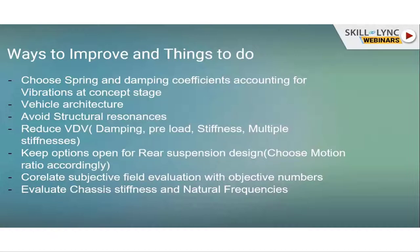I can place different mass systems at different locations of the vehicle and understand the effect on each frequency. Avoid structural resonances — generally it is hard to avoid them, but ideally in my experience structural frequencies should be somewhere above 30 to 32 Hz, which is a very tough thing to achieve. To reduce VDV, there are ways: damping, trail load of suspension stiffness, multiple stiffnesses on the suspension curve. Keeping options open for rear suspension design is important, and the motion ratio should be chosen accordingly.